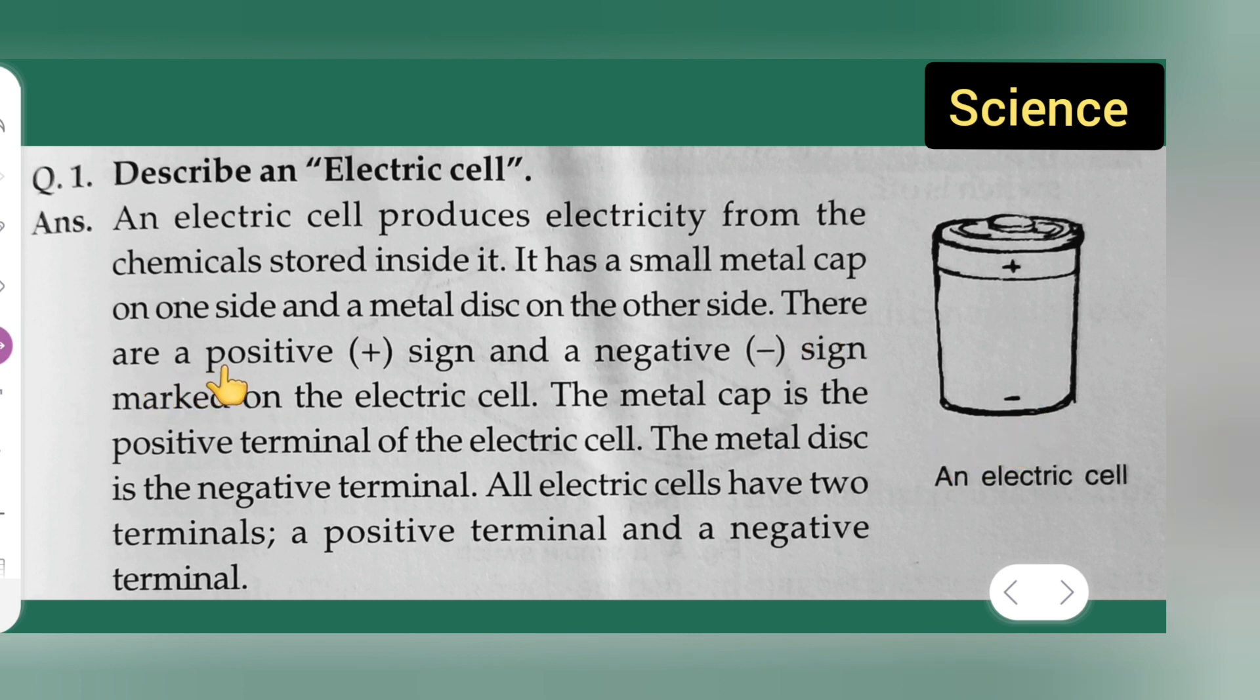There are a positive sign and a negative sign marked on the electric cell. Here you can see the positive and negative signs. The metal cap is the positive terminal of the electric cell.